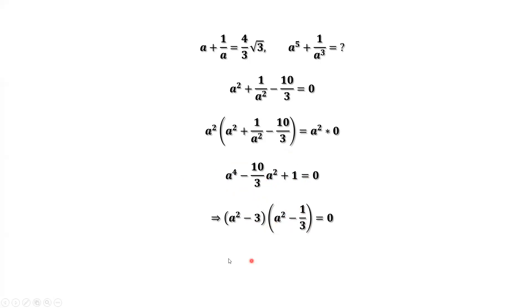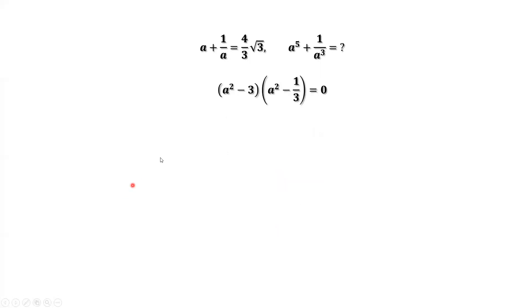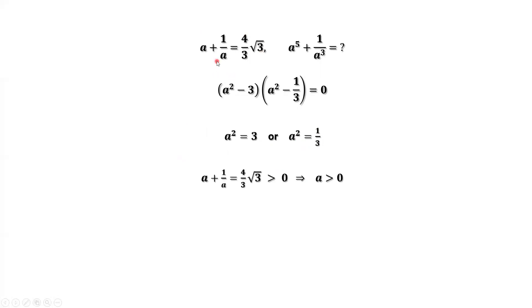We have two answers. So a squared equals 3 or a squared equals 1 over 3. When we take the square root for both solutions, we have a equals square root of 3 or a equals 1 over square root of 3. Because a is positive, we don't consider negative solutions.